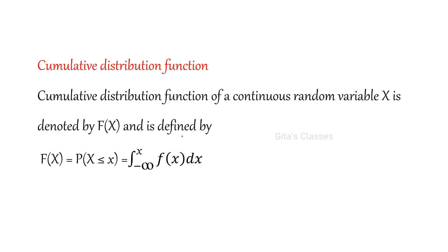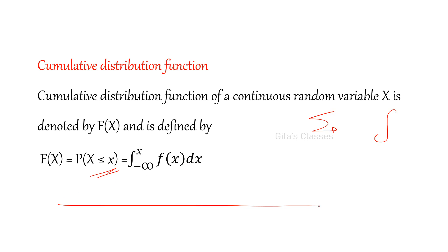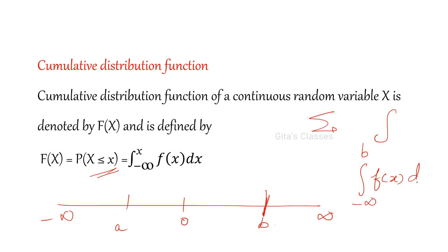Now we are going to see the cumulative distribution function. Cumulative means summation. In discrete we used sigma, and summation means integration in continuous. So, p of x less than or equal to x is the integral from minus infinity to x of f of x dx. If you have limits from a to b and you want to find the cumulative distribution function up to point b, then it will be the integral from minus infinity to b of f of x dx.